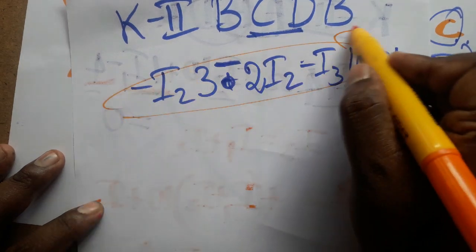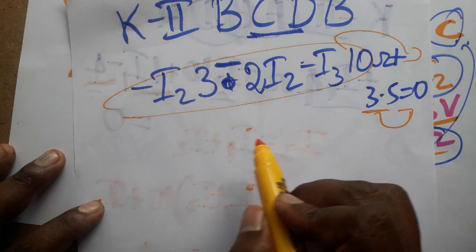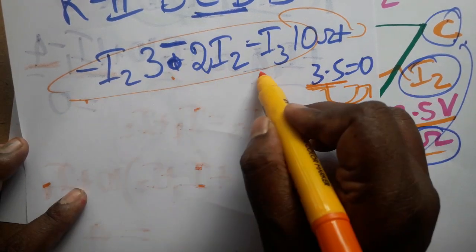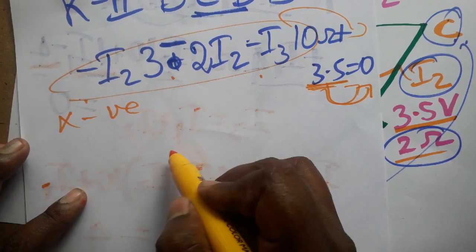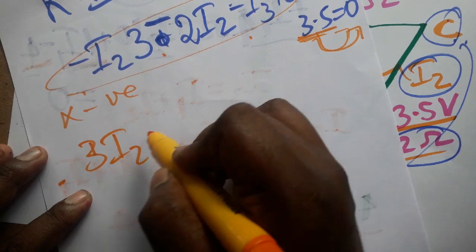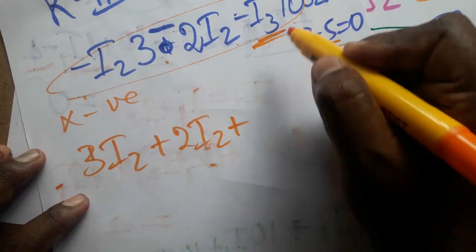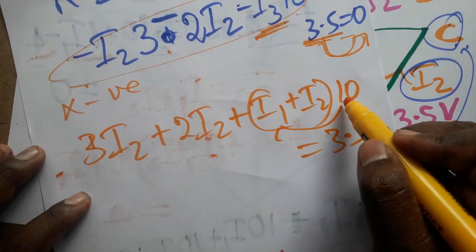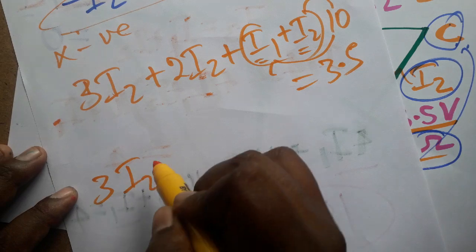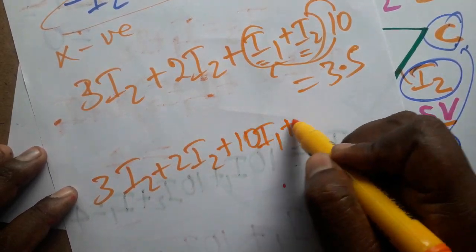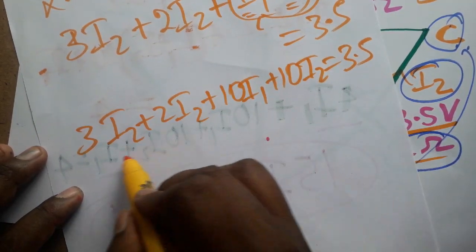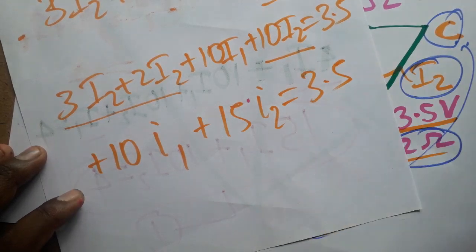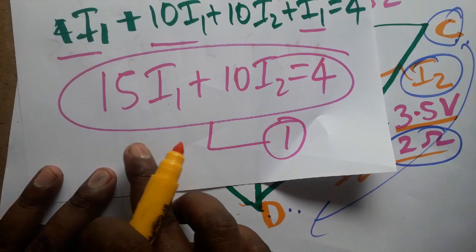Rearranging — taking 3.5 to the left side and multiplying through by minus one to make all terms positive: 3·I2 + 2·I2 + (I1 + I2)·10 = 3.5. Expanding: 10·I1 + 10·I2 + 3·I2 + 2·I2 = 3.5. Collecting I2 terms gives 10·I1 + 15·I2 = 3.5. This is Equation 2.